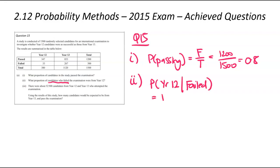We're trying to find the probability that they were year 12 given they failed that exam. Again, I'm thinking F over T. My total relates to the people I care about, only the people who failed, which is 300. That's our denominator.